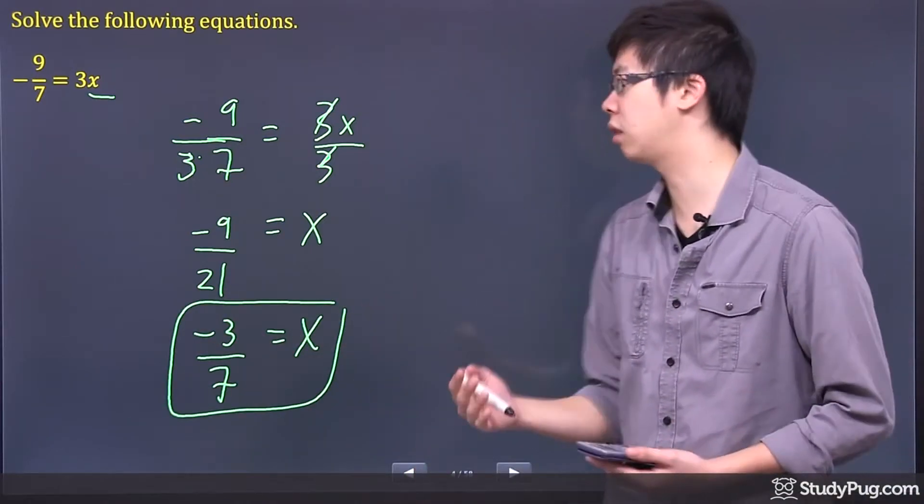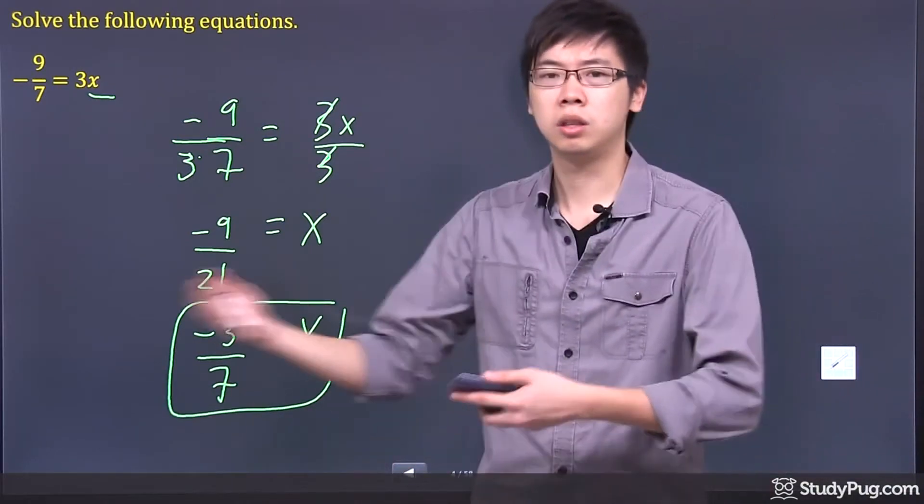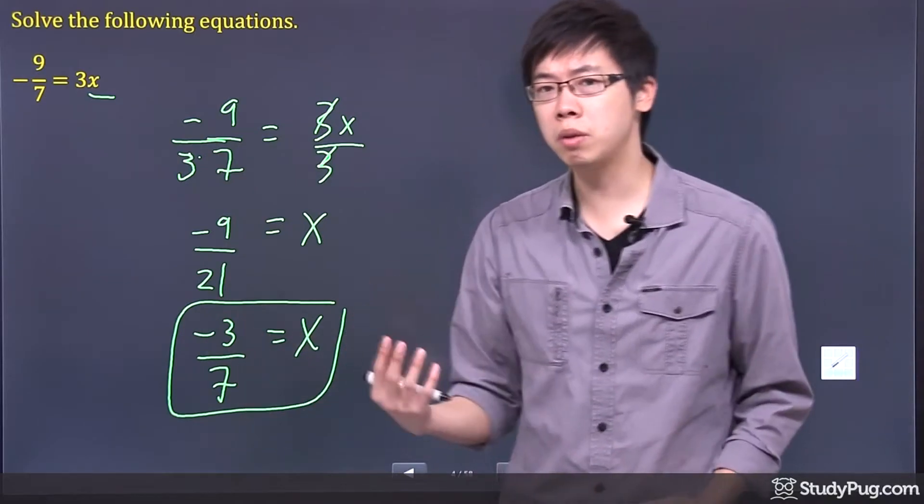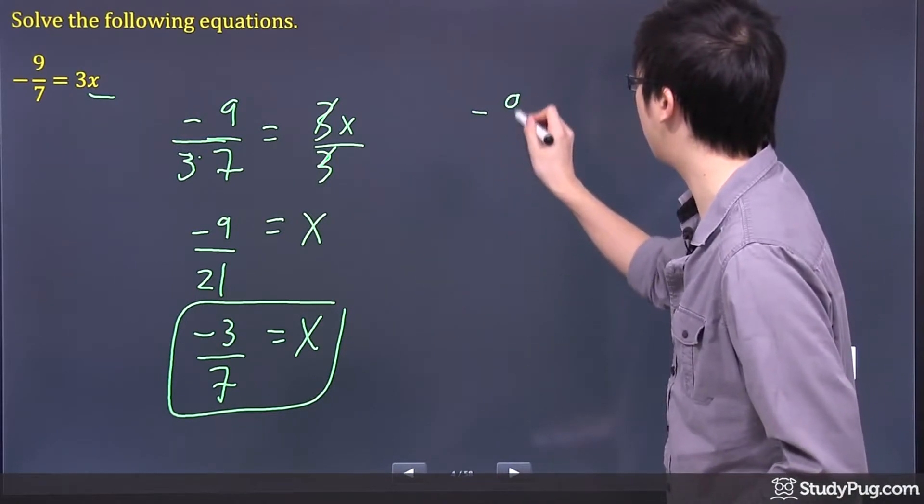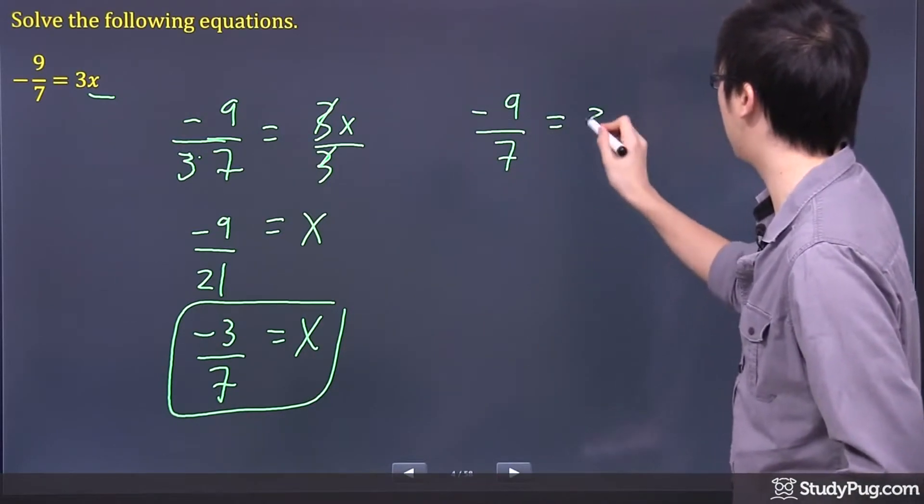Now, sometimes people don't like the idea where you have to divide both sides by the 3. So what we can do is something that's called cross-multiplying. So let's try this question one more time. Negative 9 over 7 equals 3x, right?